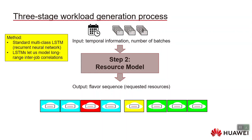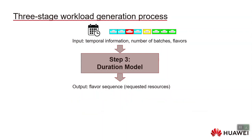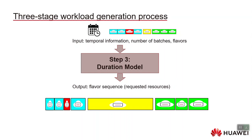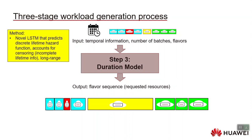To generate the flavor sequence, we use a standard multi-class LSTM with a softmax for the probability of the next flavor at each step. The LSTM is well-suited for this because its long-term memory lets us model long-range inter-job correlations. Once we've generated the flavor sequence, we input all this information into our duration model, which outputs a lifetime for each job. For this we use a novel LSTM that predicts a discrete lifetime hazard distribution at each job, allowing us to account for censoring — where you have incomplete lifetime information in historical data — and to model long-term inter-job correlations in lifetime.